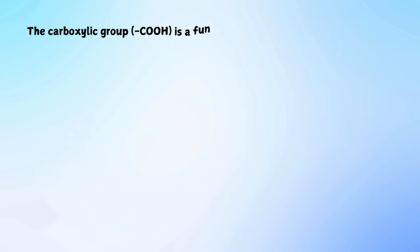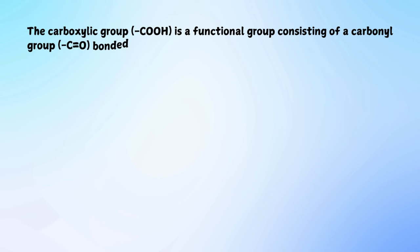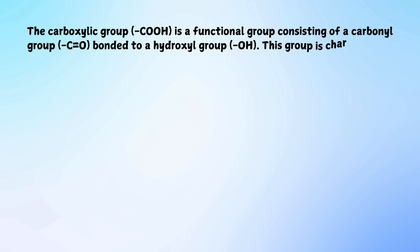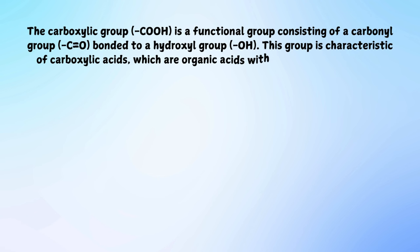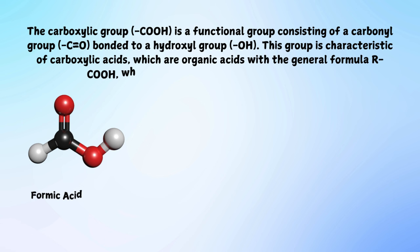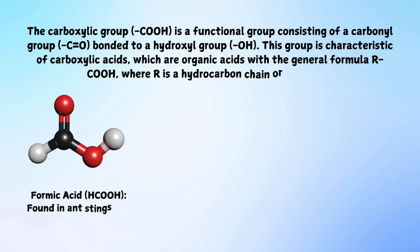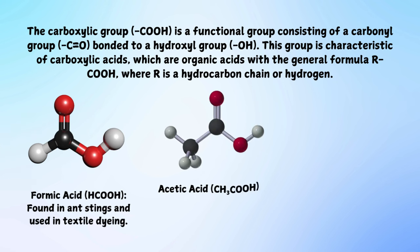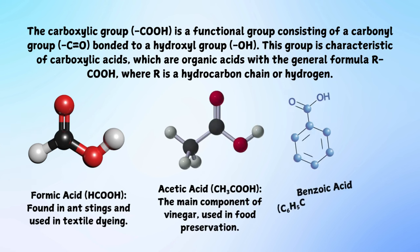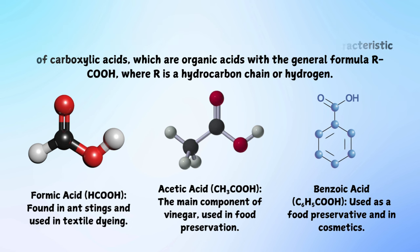The carboxylic group (-COOH) is a functional group consisting of a carbonyl group (C=O) bonded to a hydroxyl group (-OH). This group is characteristic of carboxylic acids, which are organic acids with the general formula R-COOH, where R is a hydrocarbon. Examples include formic acid, found in ant stings and used in textile dyeing; acetic acid, the main component of vinegar, used in food preservation; and benzoic acid, used as a food preservative and in cosmetics.